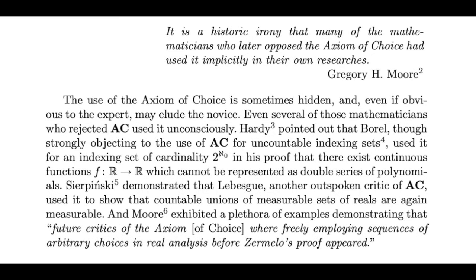Sierpiński demonstrated that Lebesgue, another outspoken critic of the axiom of choice, used it to show that countable unions of measurable sets of reals are again measurable. And Moore exhibited a plethora of examples demonstrating that, quote, future critics of the axiom of choice were freely employing sequences of arbitrary choices in real analysis before Zermelo's proof appeared.